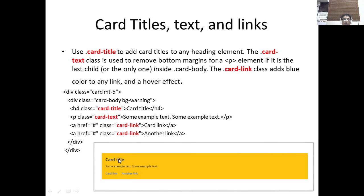We can also have card titles, text, and links. We use the card-title class to add card titles to any heading element. The card-text class removes bottom margins for a paragraph element if it is the last child or the only one inside a card-body, so it removes the bottom margin if it is the last element or last paragraph. The card-link class adds blue color to any link and a hover effect — an effect that triggers when you move the mouse over the link.